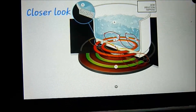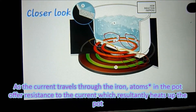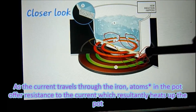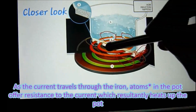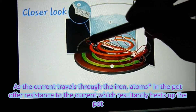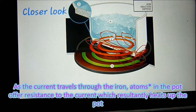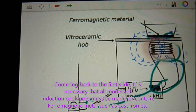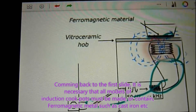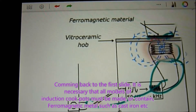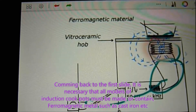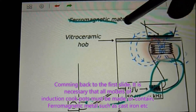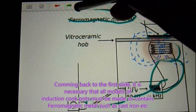As the current travels through the iron, molecules in the pot offer resistance to the current, which results in the heating of the pot — thus cooking food. It is necessary that all cookware used on an induction stove must be made of ferromagnetic metals such as cast iron or stainless steel.